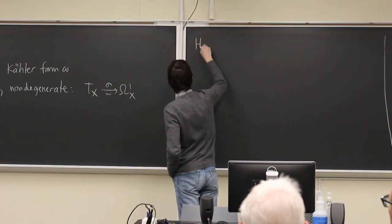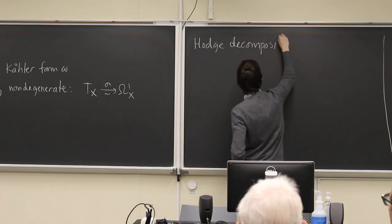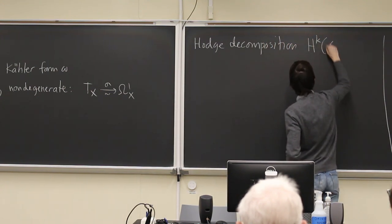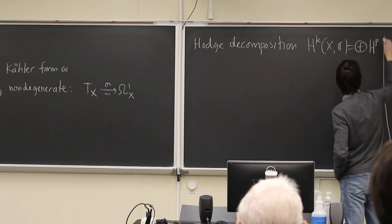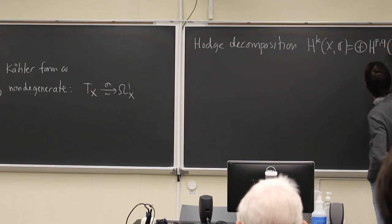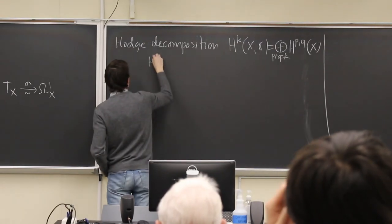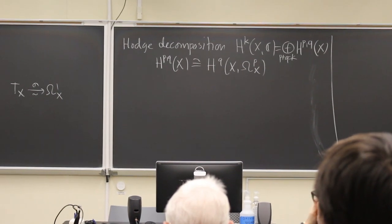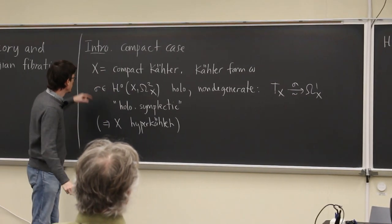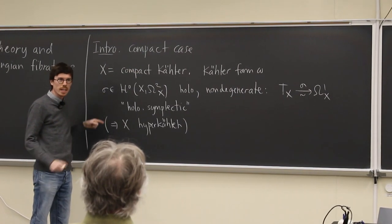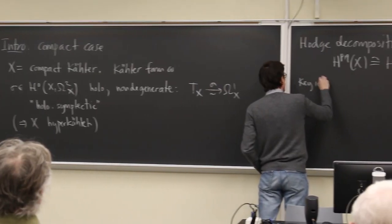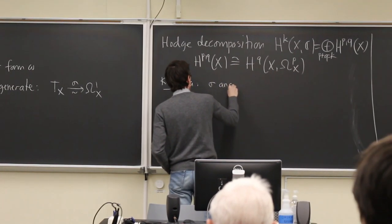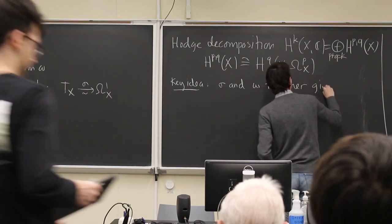Now let me look at the Hodge theory. We have the Hodge decomposition on cohomology, so I get H^K(X,C) as the sum of these H^{p,q} spaces. I can also think of these spaces as cohomology of forms, so H^{p,q} is isomorphic to H^q(X, Ω^p_X). The key idea I want to illustrate by this compact example is that when you have the Kähler form and the symplectic form together, they give you lots of interesting symmetries.